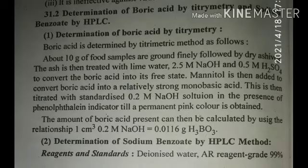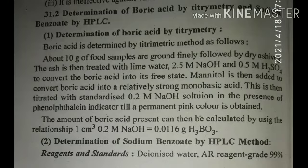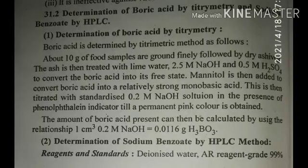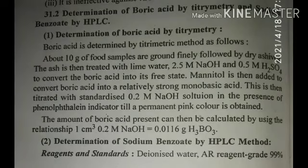Mannitol is then added to convert boric acid into a relatively strong monobasic acid. This is then titrated with standard 0.2 molar NaOH using phenolphthalein indicator. After the NaOH and lime water treatment separates the boric acid, mannitol converts it to a strong monobasic acid, which is then titrated with standardized NaOH. The permanent pink color is the endpoint.